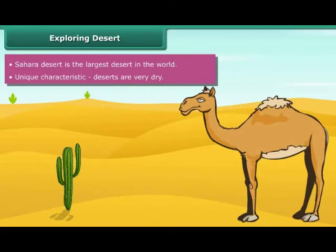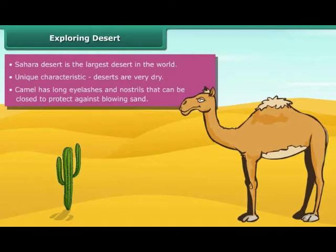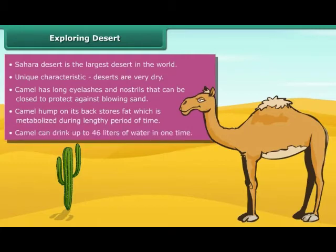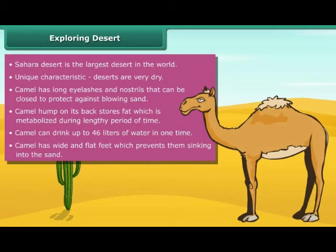The camel has many adaptations that are specifically suited to desert habitat. It has long eyelashes and nostrils that close to protect against blowing sand. A large hump on its back stores fat which is metabolized during lengthy periods. Camels can drink up to 46 liters of water at one time and can live without water for a week. Wide and flat feet prevent the camel from sinking into the sand.